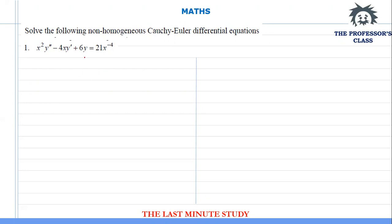Let's start with tutorial 3, question number 2. In this question we are supposed to solve the following non-homogeneous Cauchy-Euler differential equations. To understand what is non-homogeneous, on the right hand side of the equation there is some function of x. Cauchy-Euler differential equations are those equations in which the power of x is equivalent to the order of the differential of the term joining that coefficient.